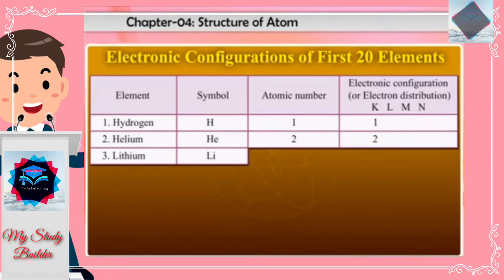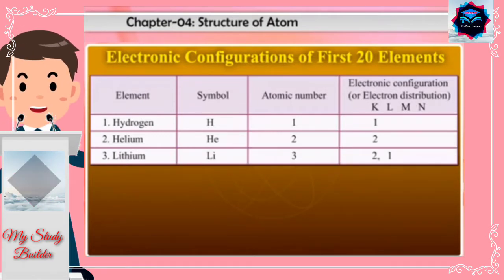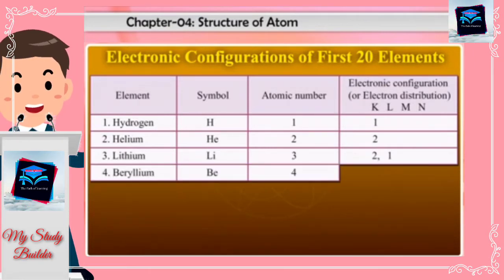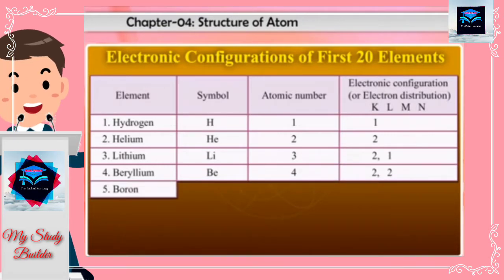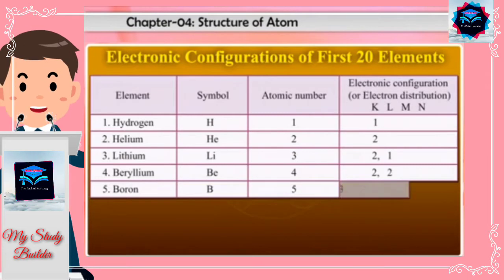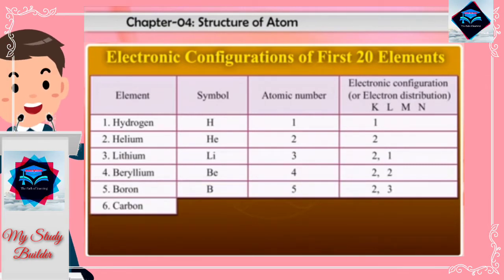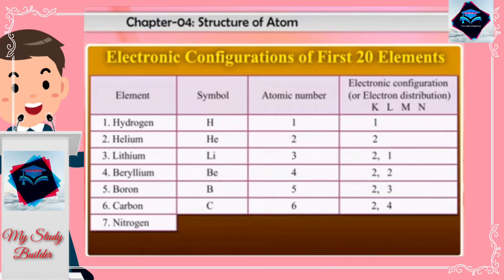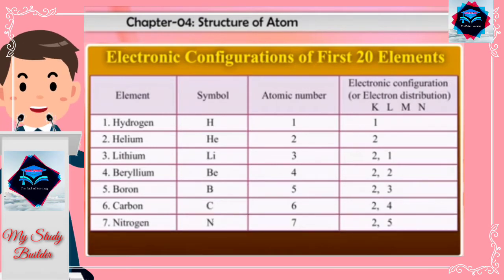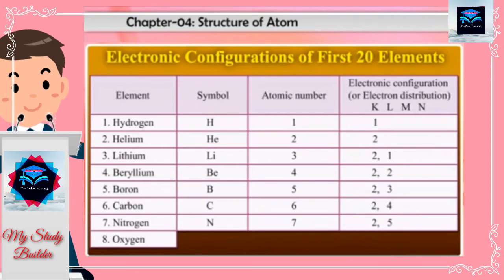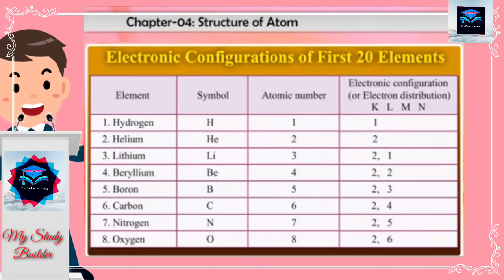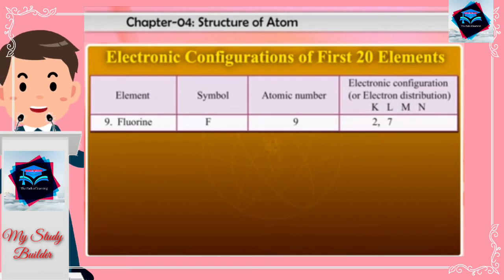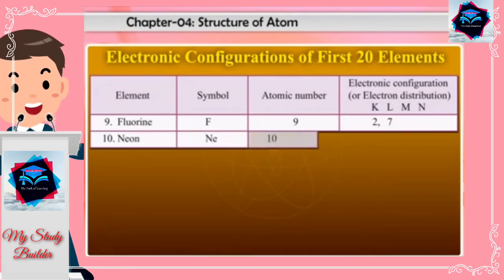Lithium Li 3: 2 1. Beryllium Be 4: 2 2. Boron B 5: 2 3. Carbon C 6: 2 4. Nitrogen N 7: 2 5. Oxygen O 8: 2 6. Fluorine F 9: 2 7. Neon Ne 10: 2 8.